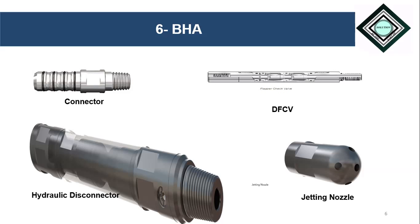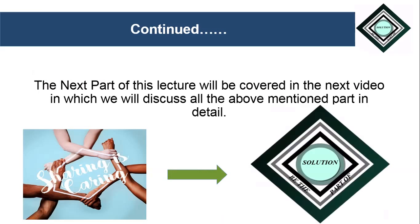These are a few fundamental parts of the coil tubing BHA. We may have many other tools depending upon the job, and we will discuss all these tools in a separate video in detail. That's all for today's lecture. The next part will be covered in the next video, in which we will see the working of a coil tubing unit — how all the above-mentioned parts work. Thank you very much for watching, and if you found this video useful, do share it with your friends.